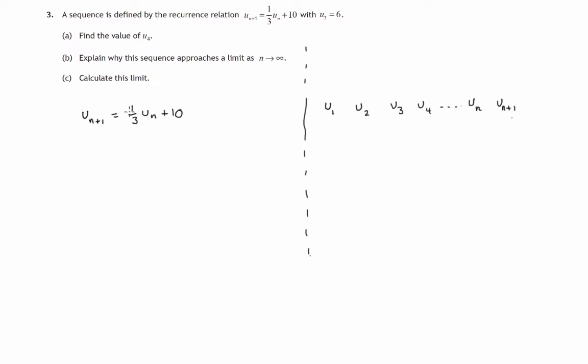So going from u1 to u2, multiply by a third and add ten. Going from u2 to u3, multiply by a third, add ten. And this works, this recurs, all the way along the sequence of numbers, multiplying by a third and adding ten.